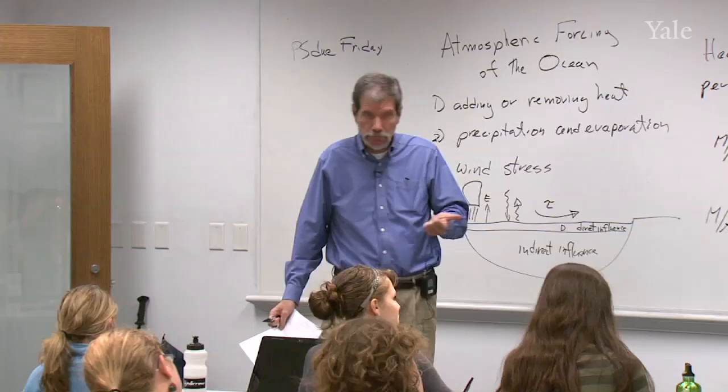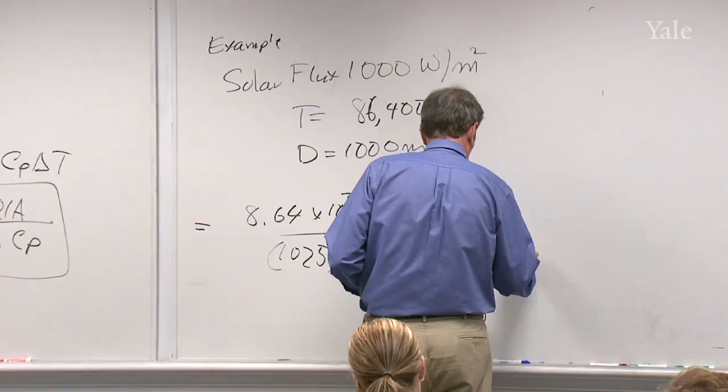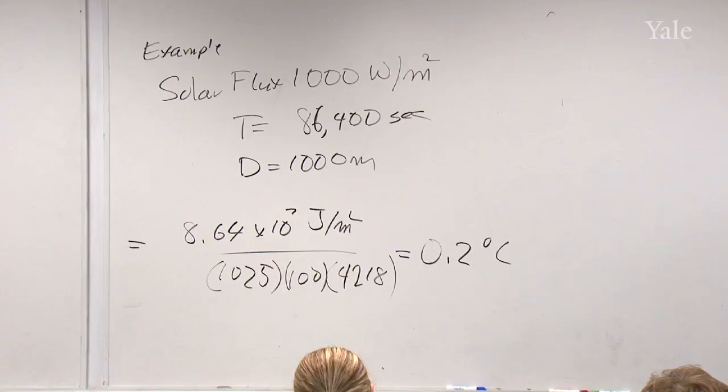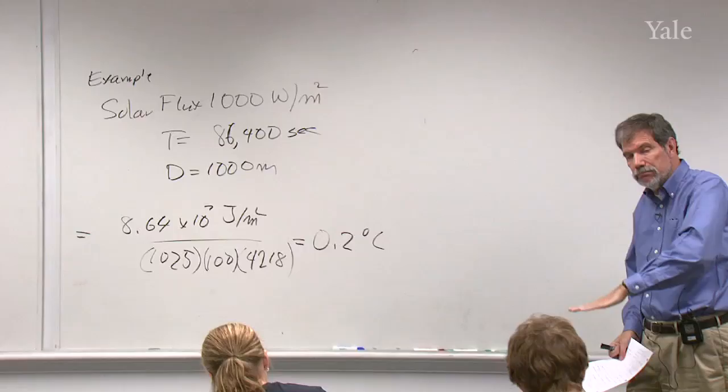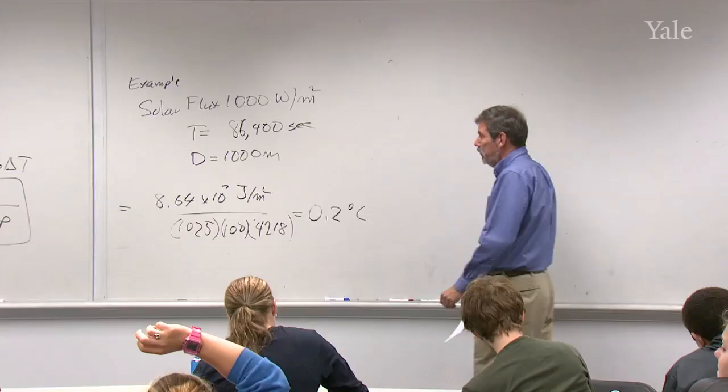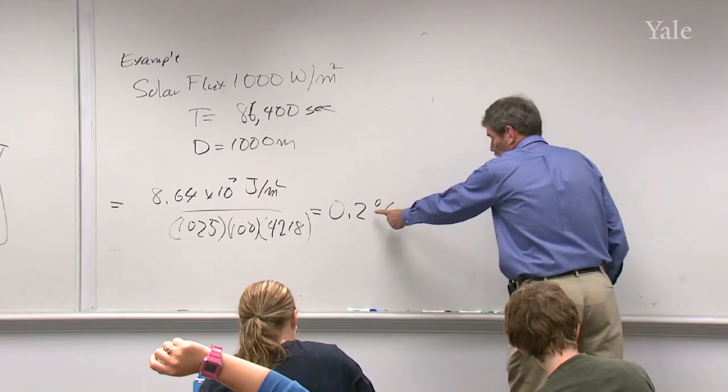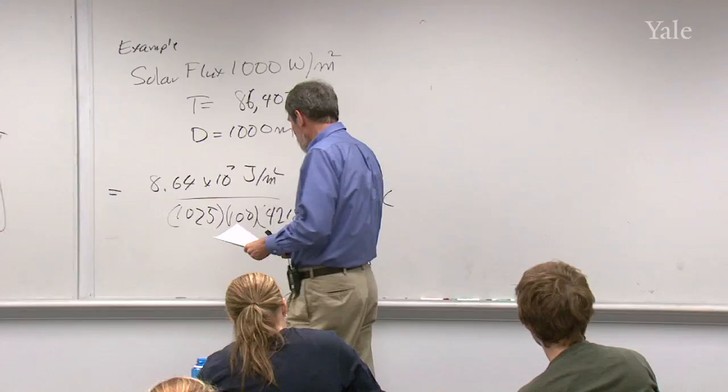And you work that out, and you might want to check me, but I got 0.2 degrees Celsius. So the warming turned out to be pretty small because that heat got distributed over a pretty great depth. And the mass of that water is large, and its heat capacity is large. So although I put in almost 10 to the eighth joules for every square meter, the rise in temperature was pretty small. Yeah? Is that supposed to be about 1,000 meters? That's supposed to be, oh, no, I made the mistake here. 100 meters, sorry. Thanks for pointing that out. 100 meters, yeah. That'd be too deep.